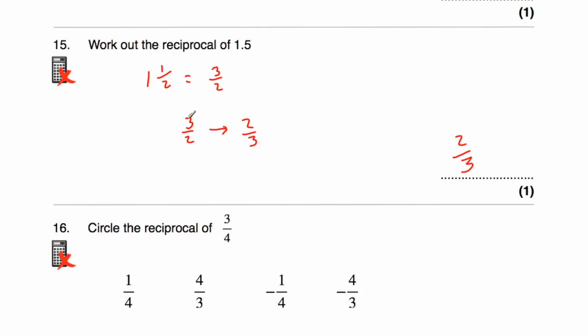Let's just check: 3 halves multiplied by 2 thirds — 3 times 2 is 6, 2 times 3 is 6, that's 6 sixths, which is a whole. Confirmed.